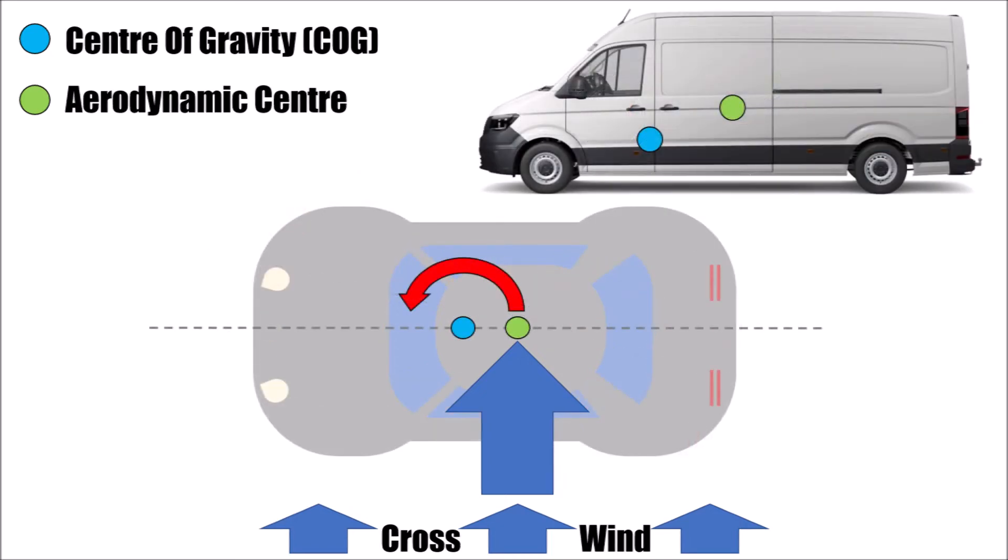An interesting case is the van. Because of the high loading capacity, the COG changes quite dramatically between loaded and unloaded. Accordingly, crosswind behavior changes. So here is our van with the unloaded COG, which is in front of the aerodynamic center. The crosswind blows and turns the van into the wind. It's easy to control for the driver. The van counteracts crosswind automatically.